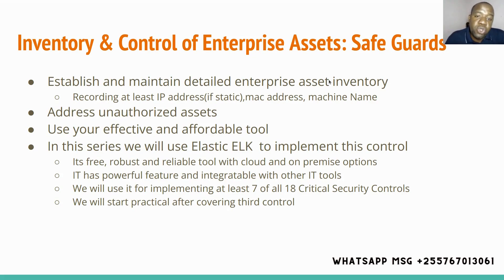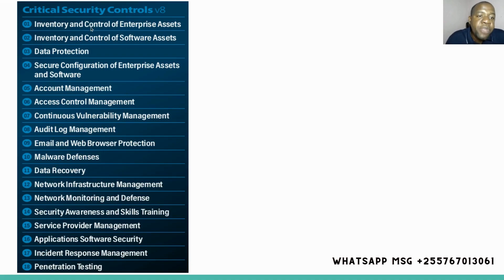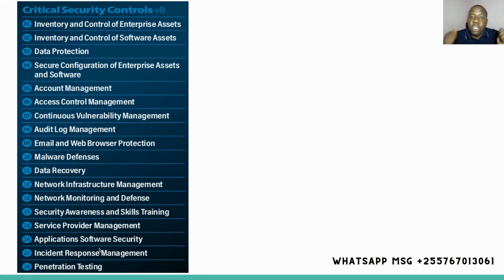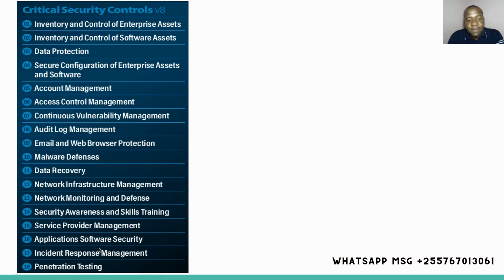We are going to see the practical side of this when we have reached the third control, and there is a reason for that — because there has to be a kind of relationship between this control and the forthcoming controls. We won't start the practical implementation immediately, but when we reach the third control we will see the practical side of using Elastic Stack to implement all the controls that can be implemented by it from there onwards. So far we have covered the first control: inventory and control of enterprise assets. Please, if you have not viewed the introductory video, please go through it so that you have a full picture of what this series covers. Please don't forget to subscribe.